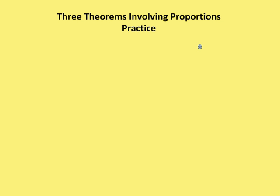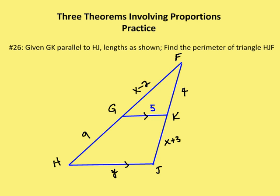Hello and welcome to Otten Math. In this edition, we're going to take on a couple of problems involving the three theorems on proportions: the side splitter theorem, the angle bisector theorem, and the theorem that involves two transversals cutting across three parallel lines. Let's get started.